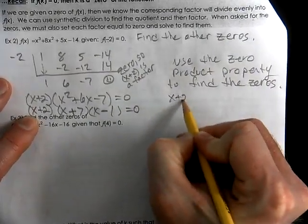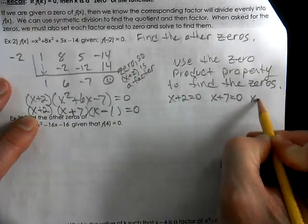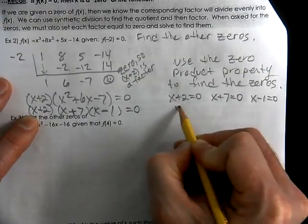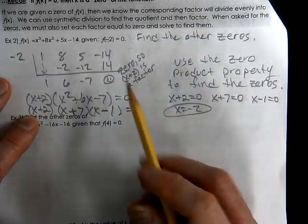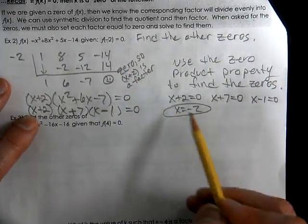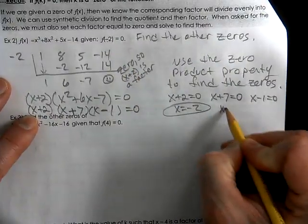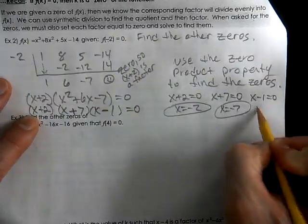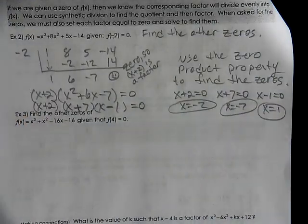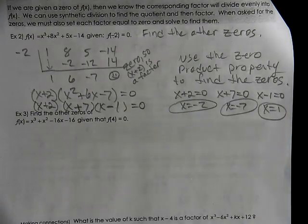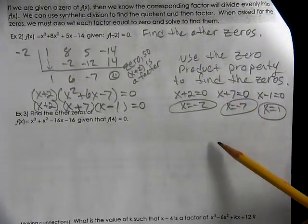Now, since we have the factors, we can use the zero product property. So that's x plus 2 equals 0, x plus 7 equals 0, x minus 1 equals 0. So of course we already knew this one. You've got to say that that's the answer, though. Don't leave it out. Don't say we just have these answers over here. So those are your x-intercepts. You could graph this if you needed to.